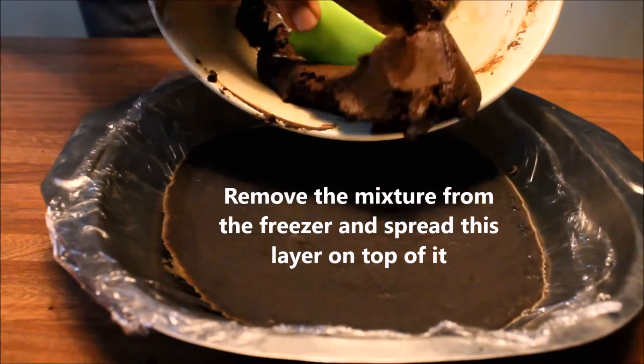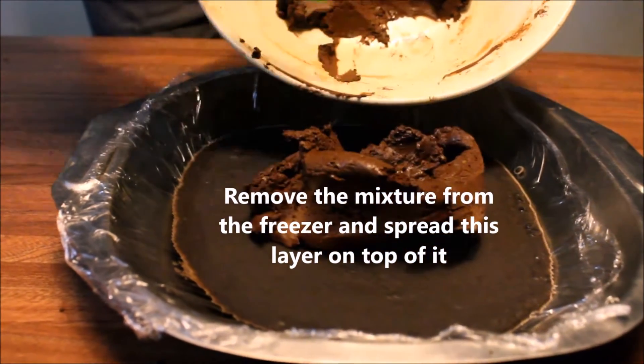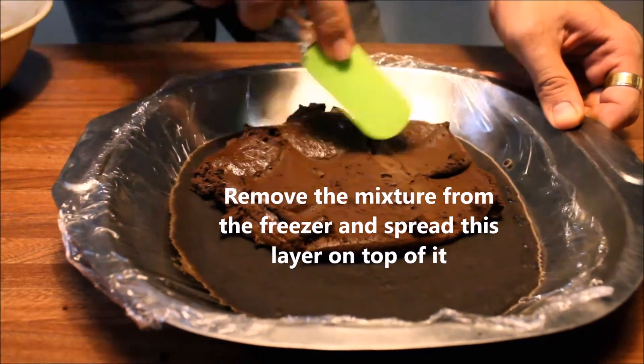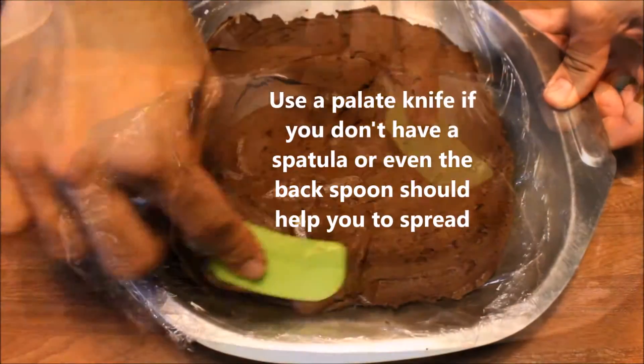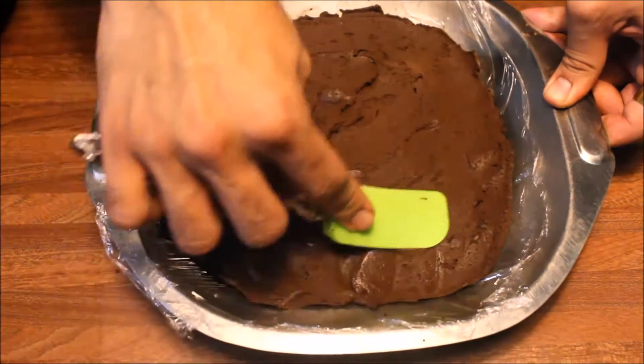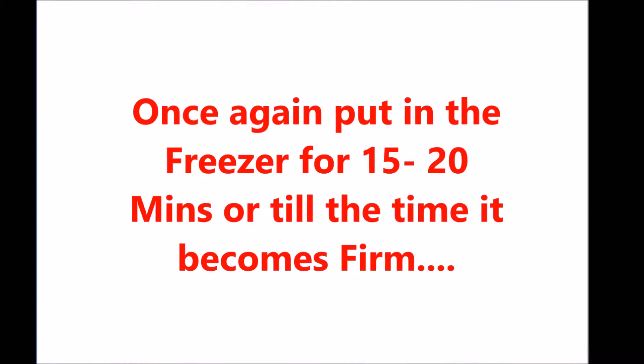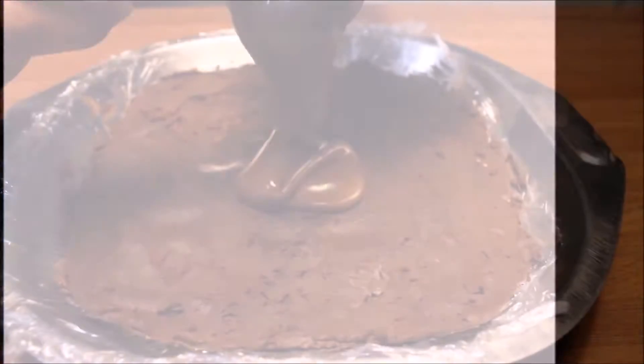As you see right now this is the texture that we get. Then remove the Oreo cookies from the freezer and spread this chocolate paste on top of it. You can use a palette knife or a spatula or even the back of a spoon. Now put it in the freezer again for another 15 to 20 minutes or till it becomes firm.